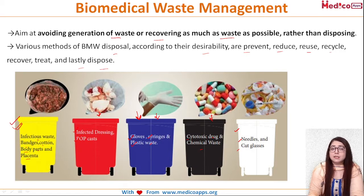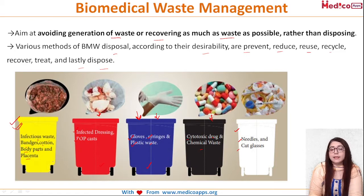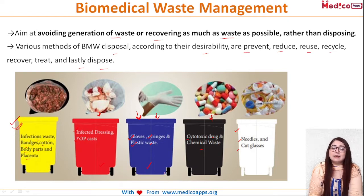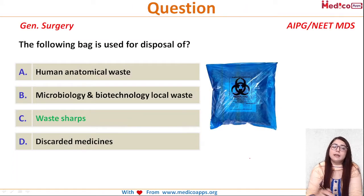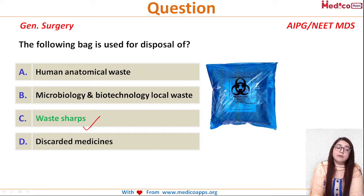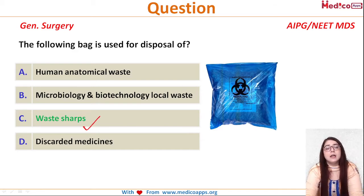Questions can be asked on any of the bins. In 2019 they asked about the blue bin; next year they may ask about red, yellow, black, or white. To summarize: yellow bag for human waste, red bag for infected dressings and plaster casts, blue bag for gloves, syringes, and plastic waste, black bag for cytotoxic drugs and chemical waste, and white bag for needles and cut glass. So the correct answer is waste sharps — needles, syringes, and gloves — which we dispose of in the blue bag.